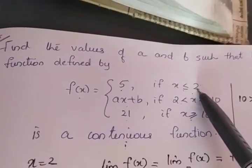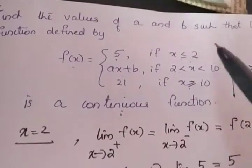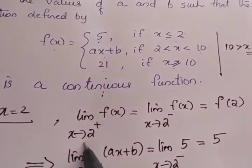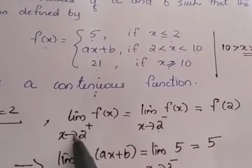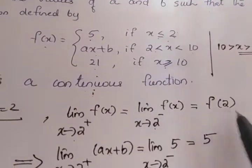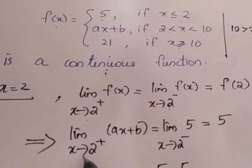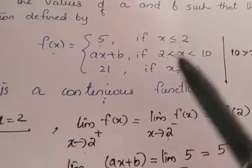So if f(x) is continuous at 2, we can write limit x tends to 2 plus f(x) equal to limit x tends to 2 minus f(x) equal to f(2). Right hand limit equal to left hand limit equal to function value. Limit x tends to 2 plus means x greater than 2, isn't it.